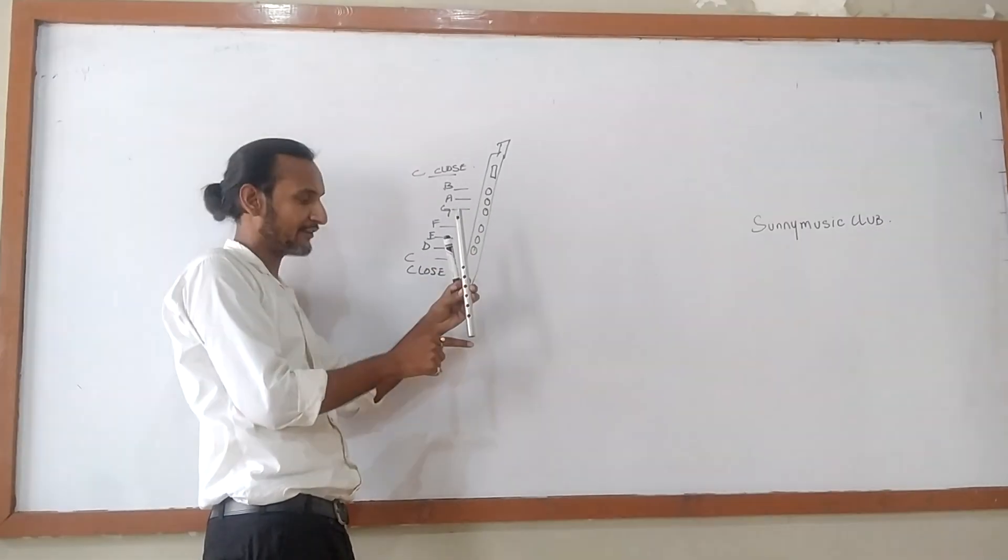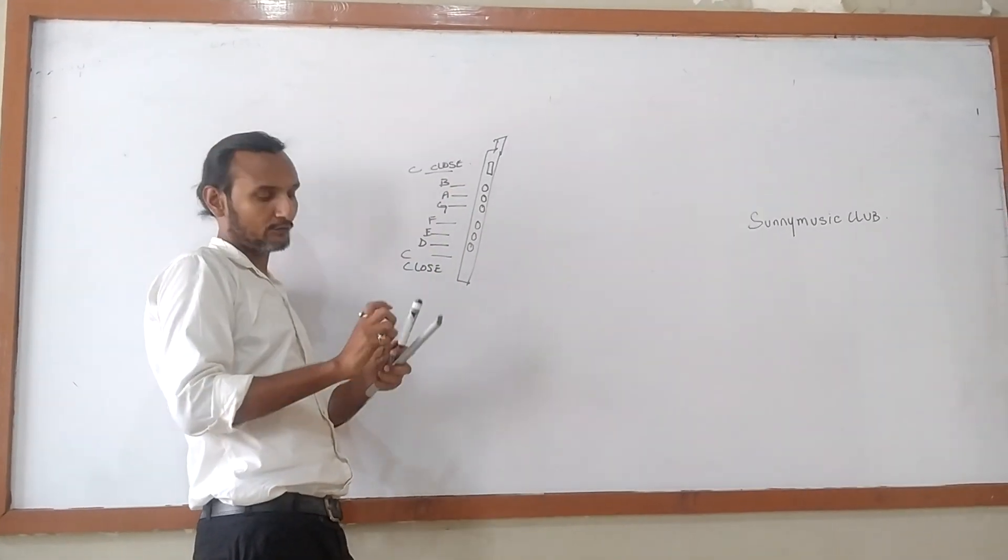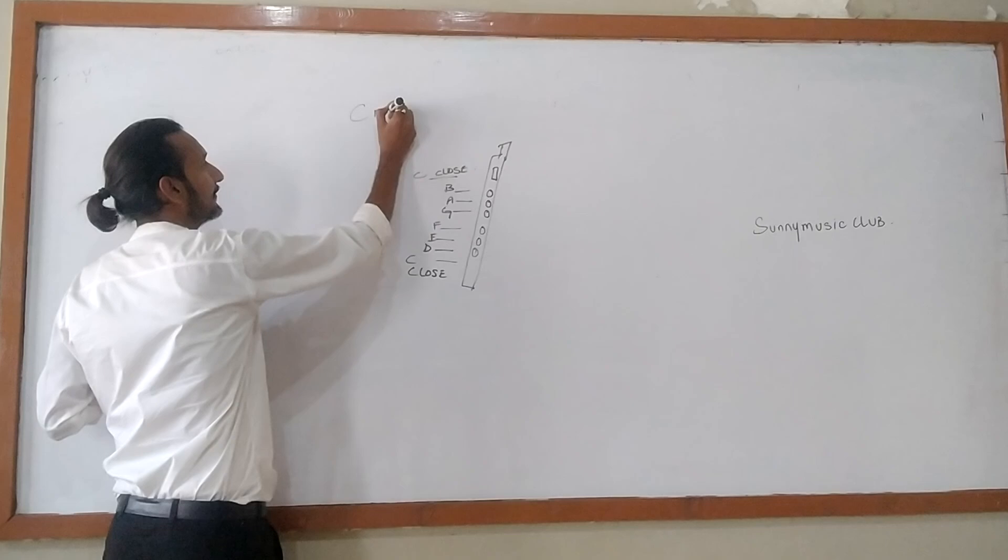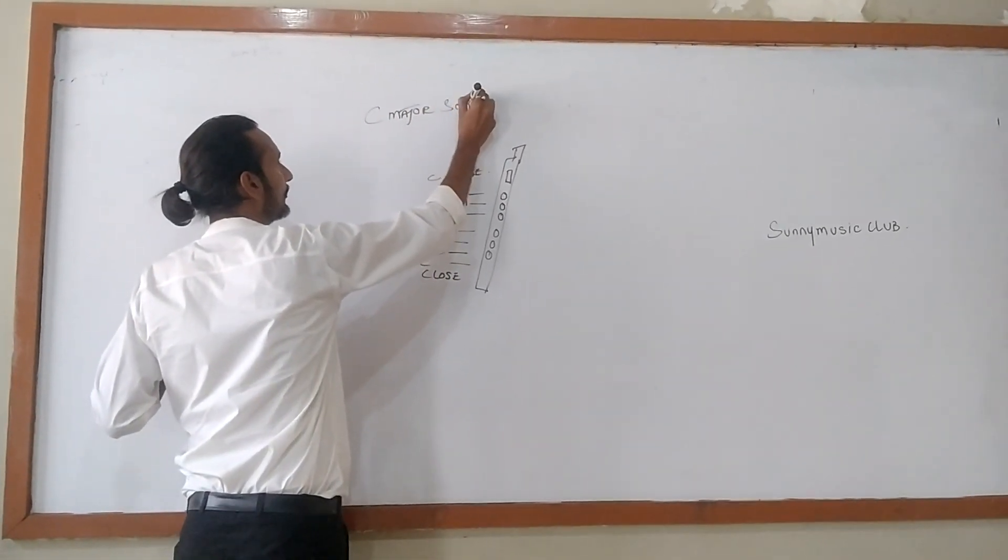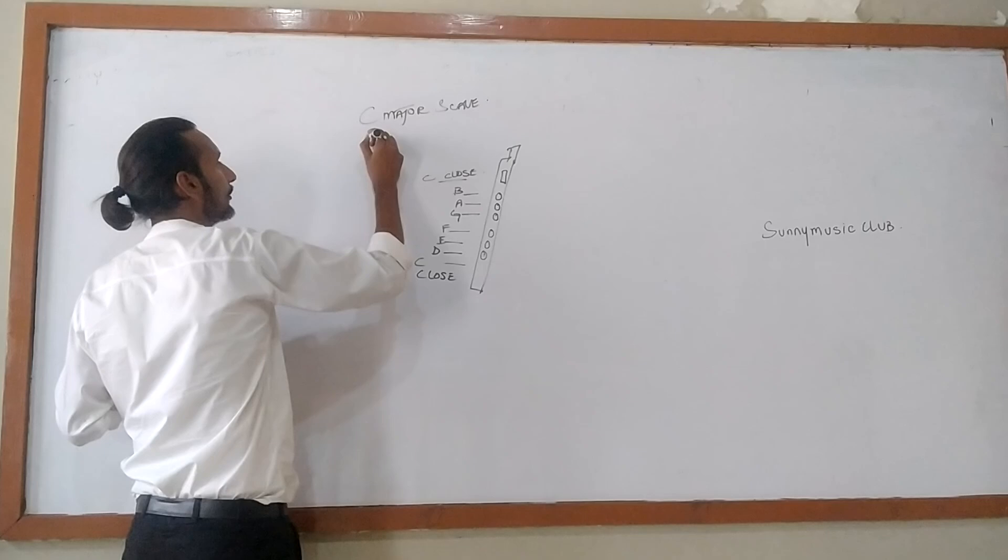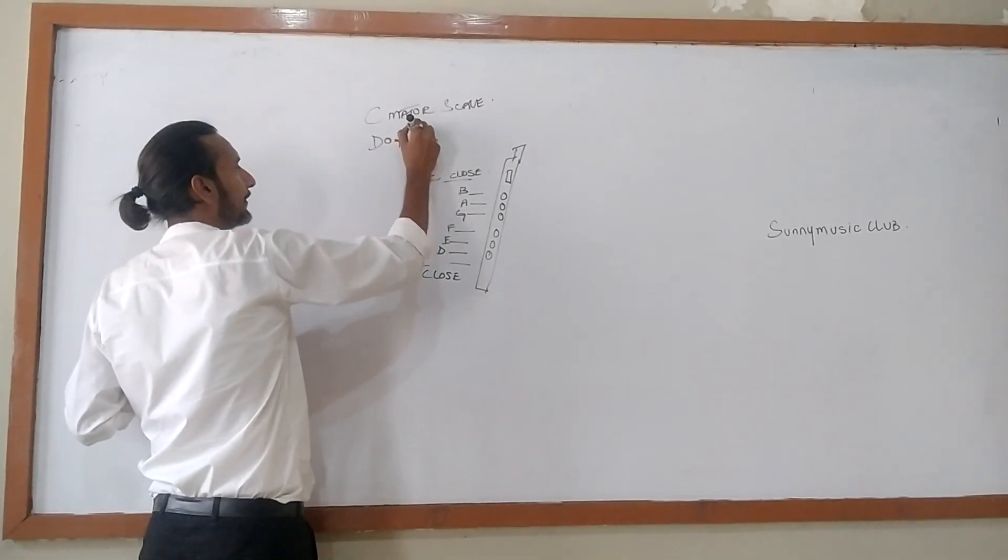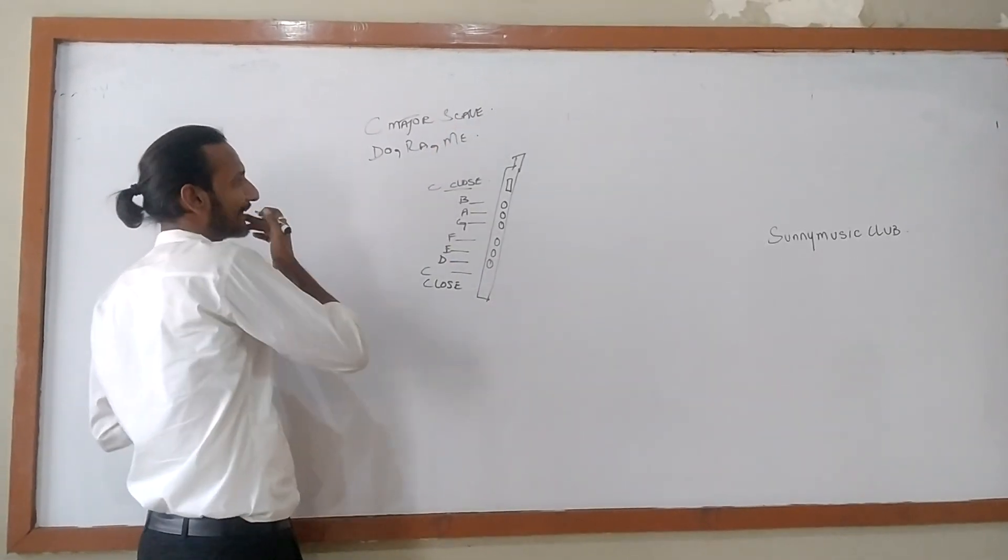So you can see in the flute there are 6 holes there. How many holes are there? Six. Out of six, we have to play the 8 sound. Eight sounds according to the C major scale.